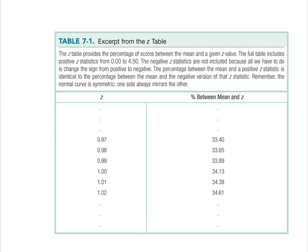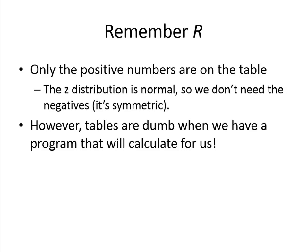We could use a Z-table, but students find them very confusing — especially the one in the book. There are no negatives on the Z-table, yet there are negatives on the distribution, which really confuses people. Why aren't there any negatives? Because it's symmetric — the negative and positive sides are the same. So if you have a homework question asking why there are no negatives on a Z-table, the answer is because it's symmetric. But that just really messes with people's brains, so we're going to use R to calculate for us instead.